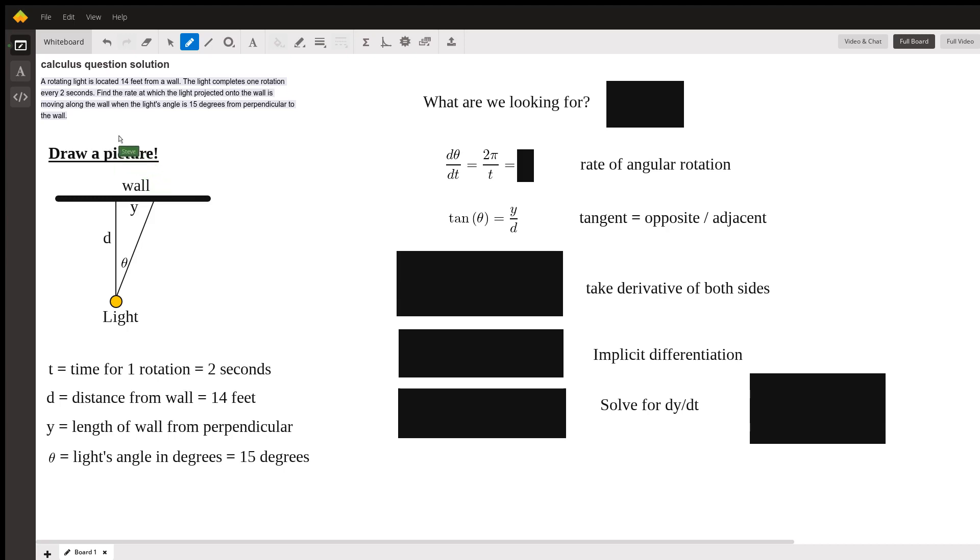First step, a rotating light is located 14 feet from a wall. Stop. Draw a wall, nice solid bar here, title it wall, and here's my light. Now you can draw an arrow showing rotation here if you want.